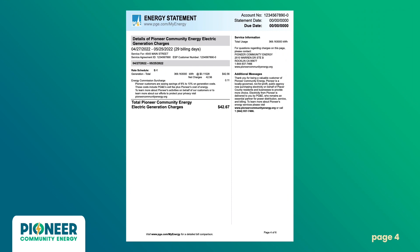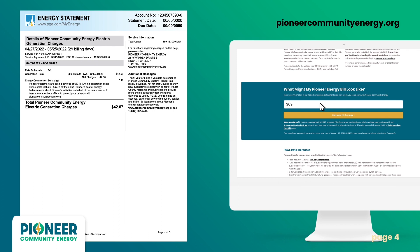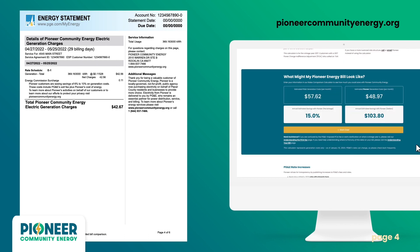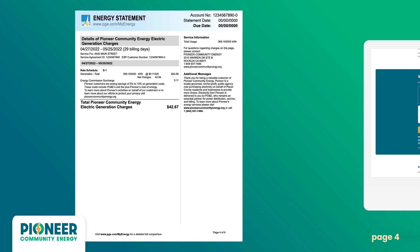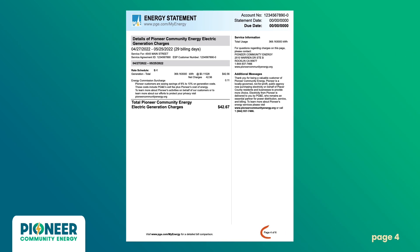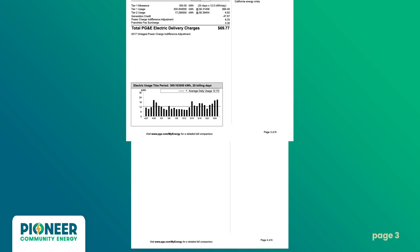E1 rate customers, you can manually calculate how much you'll save with Pioneer from your bill, or use our website's rate calculator. To manually calculate your savings, review page 4's Details of Pioneer Community Energy Electric Generation Charges. This page of the bill clearly outlines what individual charges make up the Pioneer total from your account summary on page 1.